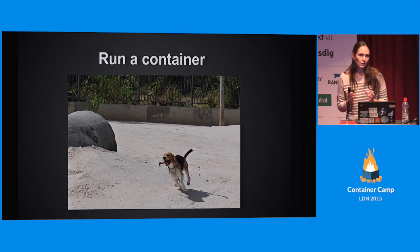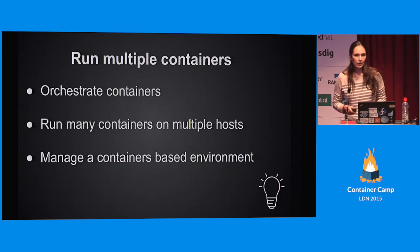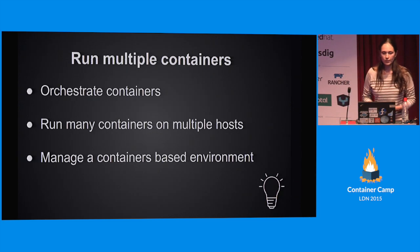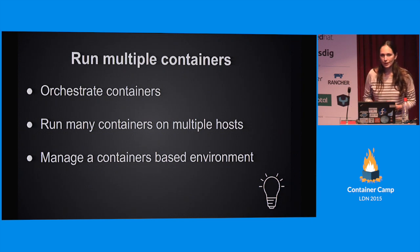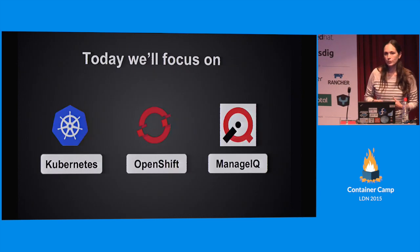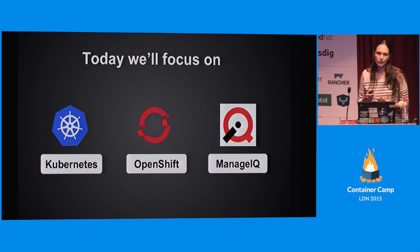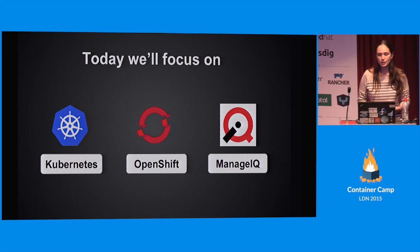Things get a little bit more complicated because we want to run multiple containers, and I think this is where one of the greatest challenges lies today in this area - the ability to orchestrate containers, run a lot of containers on multiple machines, and while doing that, still have the insight, control, and be able to manage such an environment. So today we will be talking about three open source projects: Kubernetes, OpenShift, and ManageIQ.